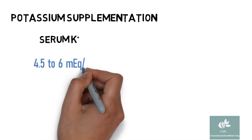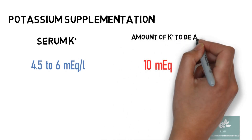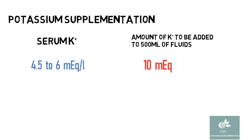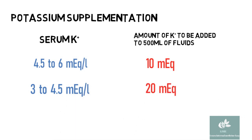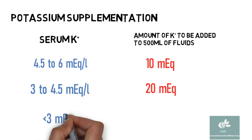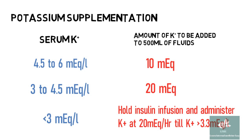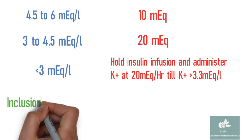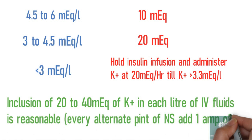Potassium supplementation: when serum potassium is 4.5–6 mEq per liter, add 10 mEq of potassium to 500 ml of normal saline. When potassium is 3–4.5 mEq per liter, add 20 mEq of potassium (1 ampoule contains 20 mEq). When potassium is less than 3 mEq per liter, stop insulin infusion and administer potassium at the rate of 20 mEq per hour until potassium is more than 3.5 mEq per liter. Inclusion of 20–40 mEq of potassium in 1 liter of fluid is reasonable — that is, every alternate pint you can add 1 ampoule of potassium.